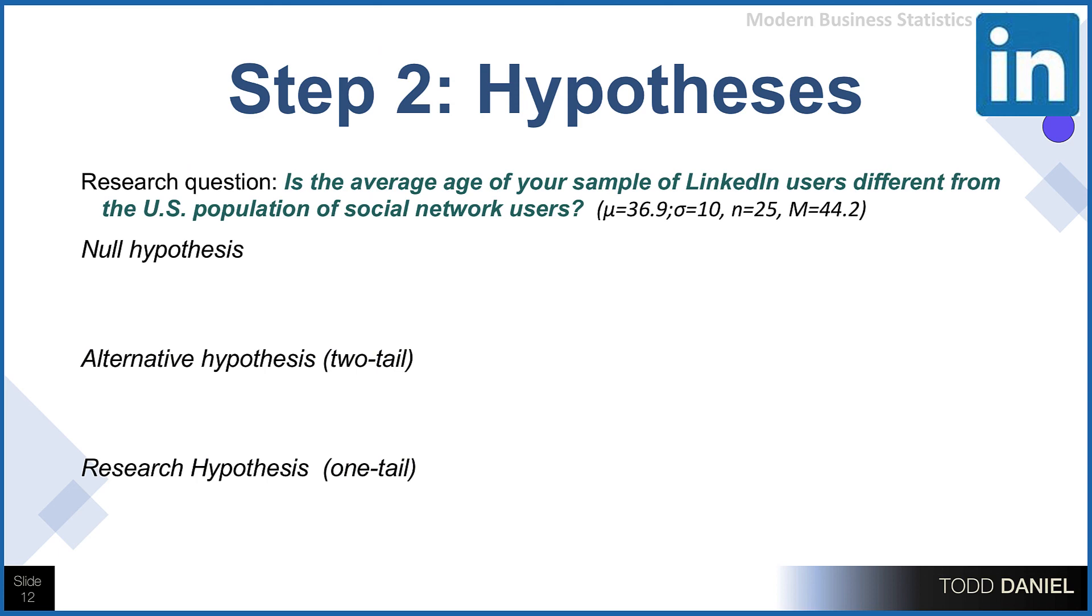Step number two is to define our null and alternative hypothesis. And that, we need to know what type of test we're using, because that's going to influence what hypotheses we choose. Well, the null hypothesis would be, in words, that LinkedIn users' age is no different than the average user. And in symbols, we would write that as h₀: μ = 36.9. This is where we plug in the number that is the mean of the population. So the population mean is 36.9. We plug that in for our null hypothesis.